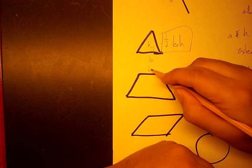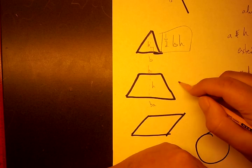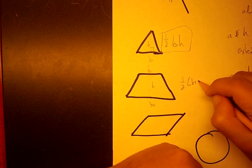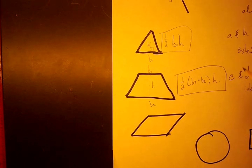On the trapezoid, this is going to be base 1, base 2. And the height, again, is perpendicular. So the area is given by one-half base 1 plus base 2 times the height. So basically the average of the bases multiplied by the height.